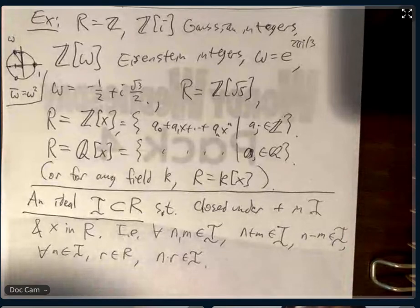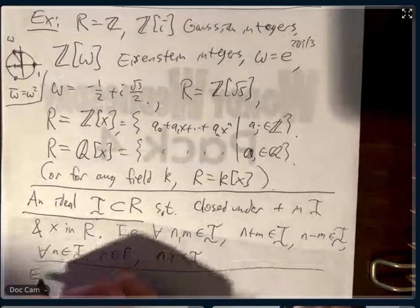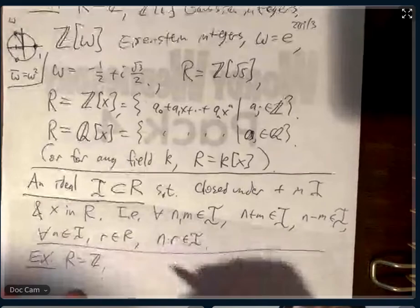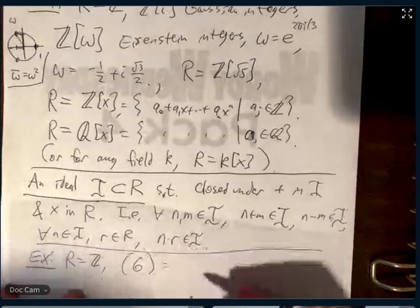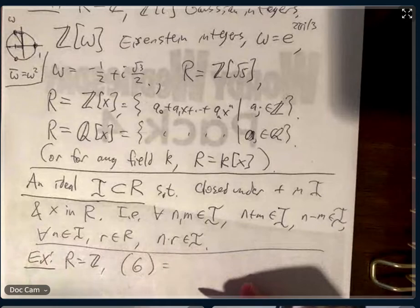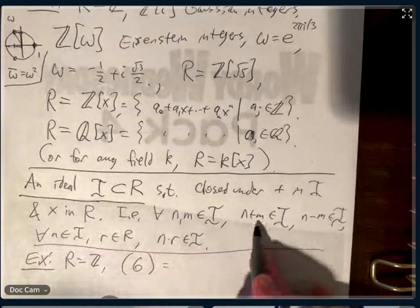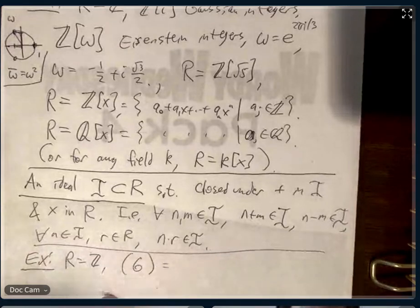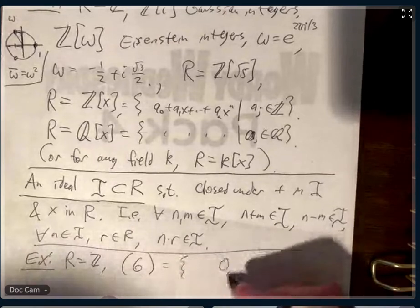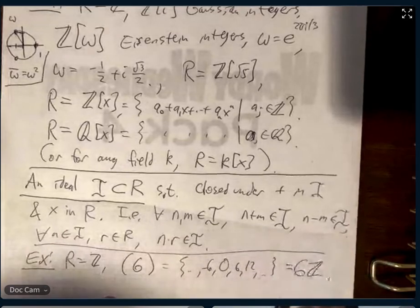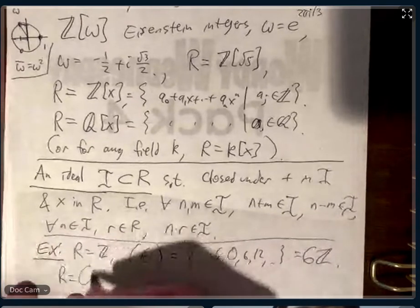Thumbs up — so far so good. Let's do some examples. If the ring is the integers, what is the ideal generated by 6? We're allowed to have 6, 6+6, 6+6+6, and 6-6 is allowed. 6 times any integer is allowed — exactly, all multiples of 6. This is {0, 6, 12, -6, …} — 6 times all of the integers.